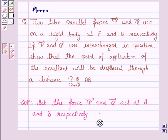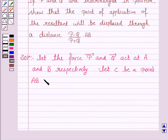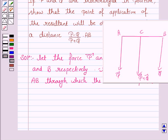Now let C be a point on AB through which the resultant passes. So we are given two like parallel forces P and Q acting at A and B and their resultant acts through a point C which is on AB.